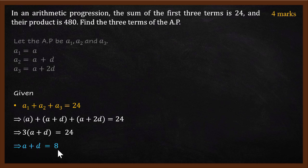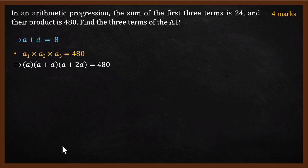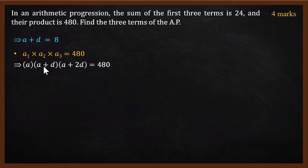So we have a plus d equals 8. Now for the second condition: we also know that the three terms, when multiplied together, give 480. That is, a multiplied by a plus d, multiplied by a plus 2d, equals 480.